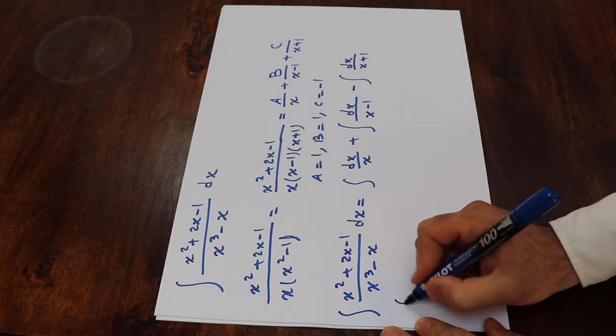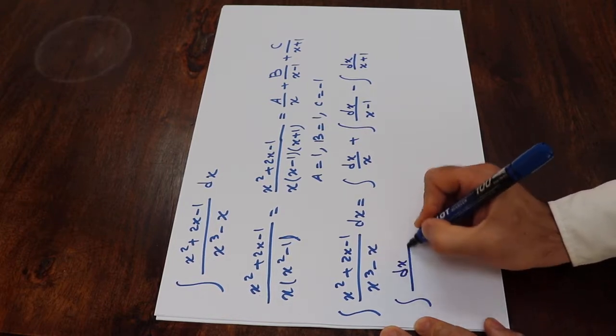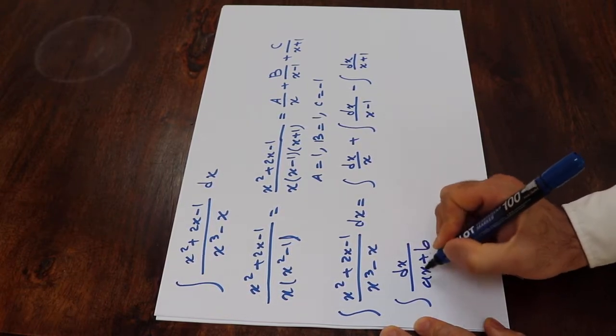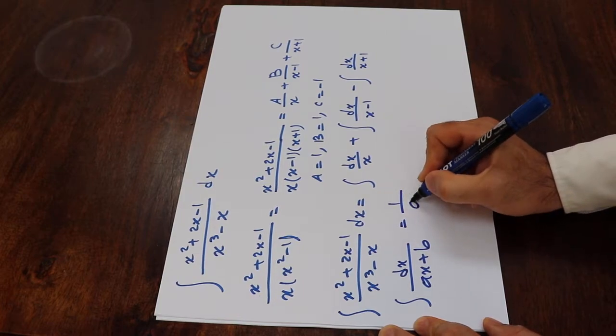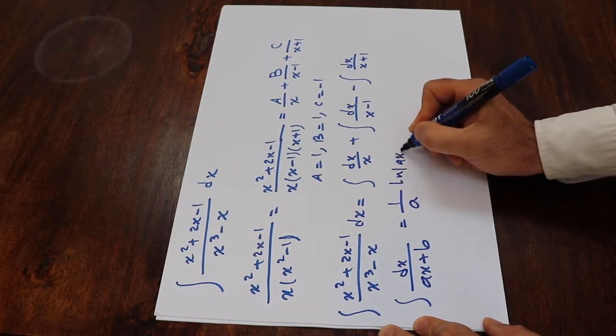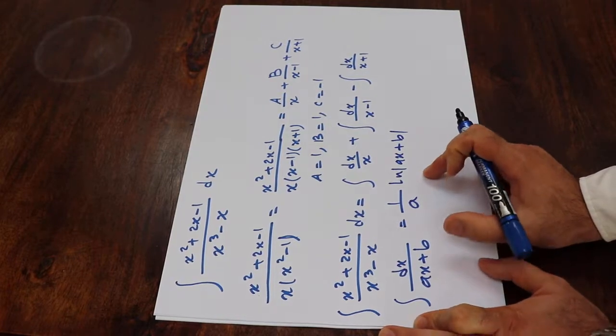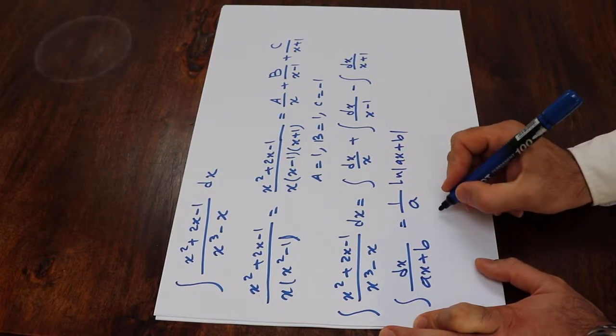So from table of integrals, you should know that the integral of dx over ax plus b is equal to 1 divided by a ln of ax plus b. So if you use this formula, you can calculate each of these integrals.